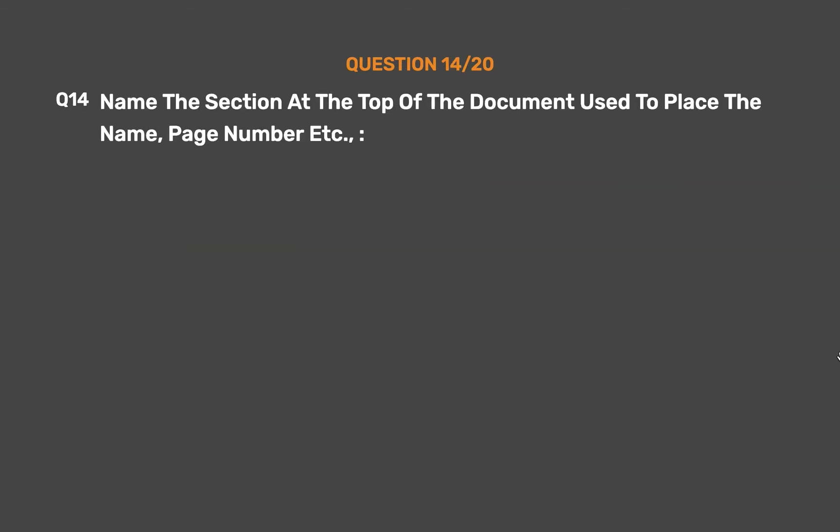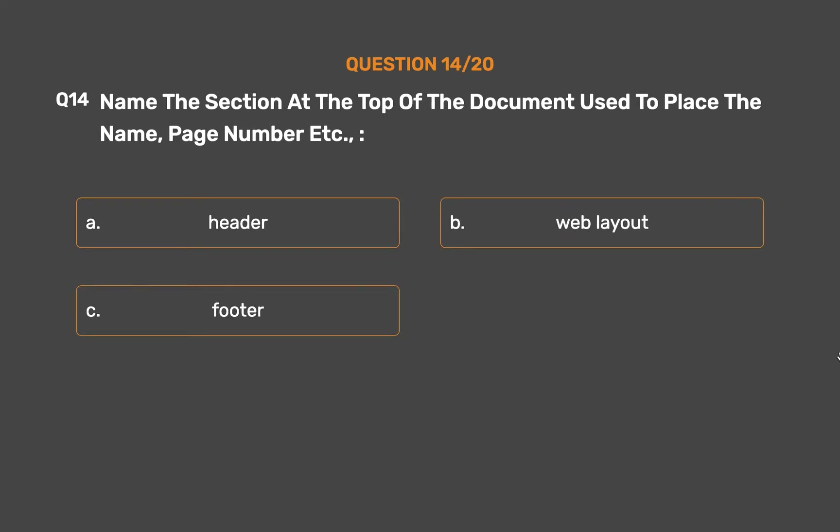Question number 14. Name the section at the top of the document used to place the name, page number, etc. Option A: Header. Option B: Web layout. Option C: Footer. Option D: Hyperlink.